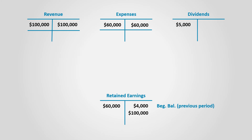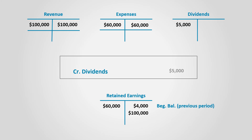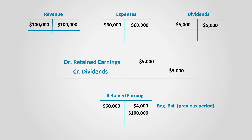The same thing applies to dividends. Dividends must be credited by its balance to close it. Remember that dividends decrease retained earnings, so the retained earnings account is debited. After posting this entry, the dividends account balance is equal to zero and retained earnings is reduced by $5,000, ending with an updated balance of $39,000.